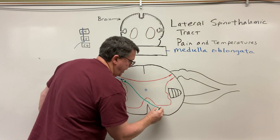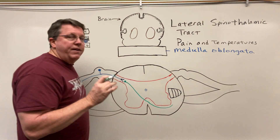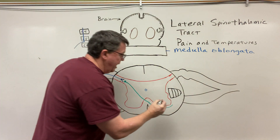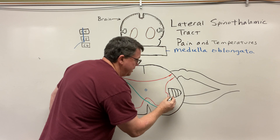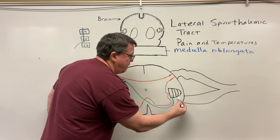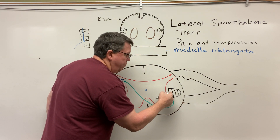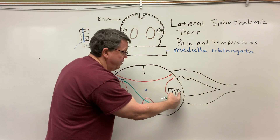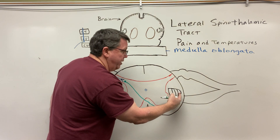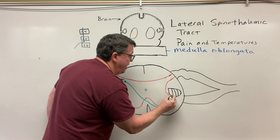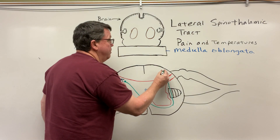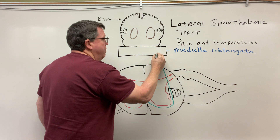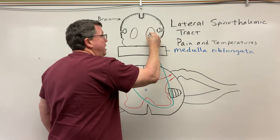Because it's going into the cervical spine, it's going to go into the most medial part of the lateral spinothalamic tract. Remember, if it was down in the feet or legs going into the sacrum, it'd be more lateral. From there it's going to travel up towards the brain, going through the medulla oblongata and into the thalamus.